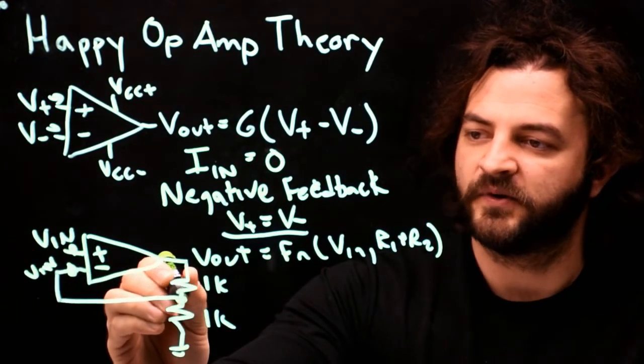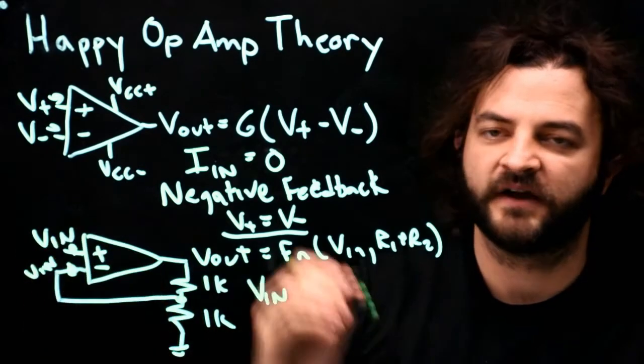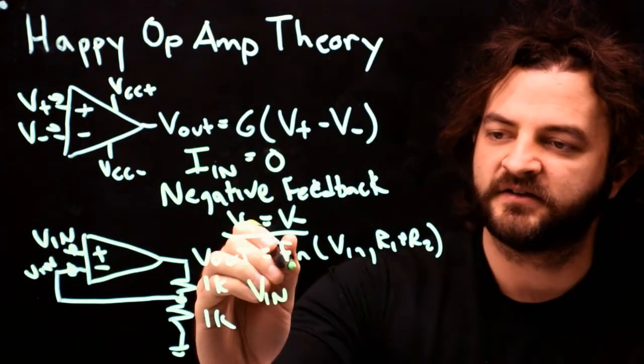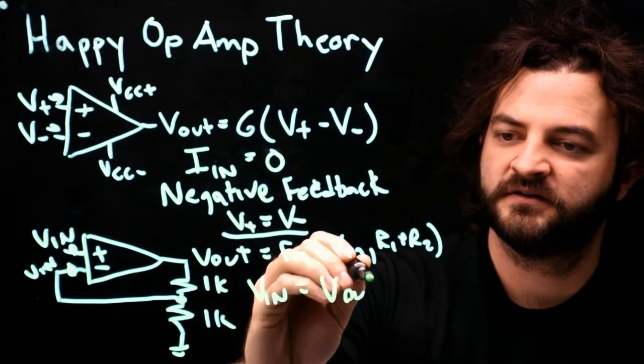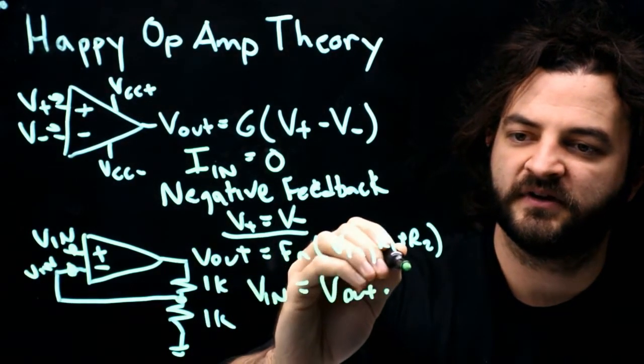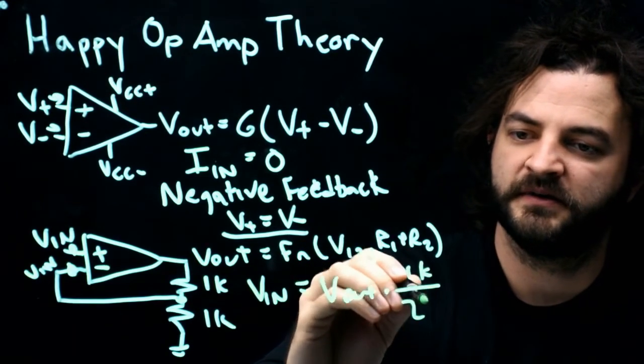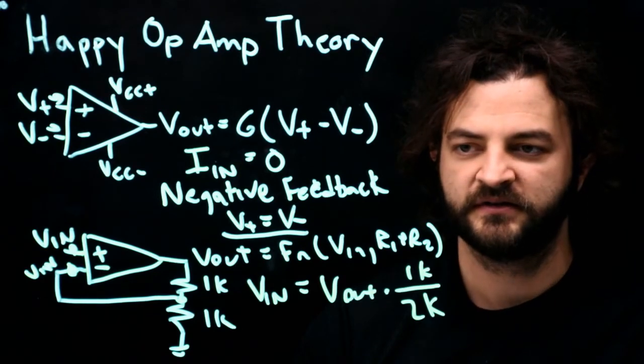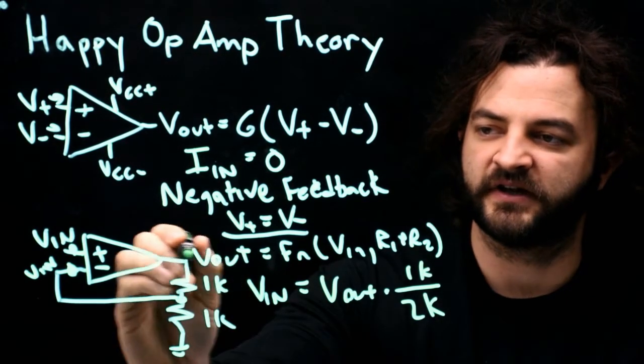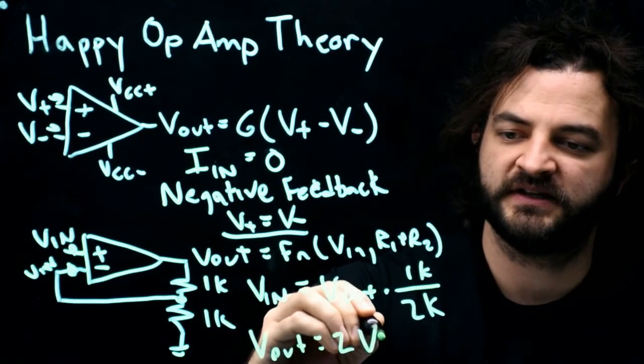I know that this point, which we'll call V in because that's the voltage that the op-amp wants it to make, is going to be equal to V out times the top resistor divided by the sum of the two resistors. That's our voltage divider equation. And if we rearrange it to look like V out, we'll have V out equals two times V in.